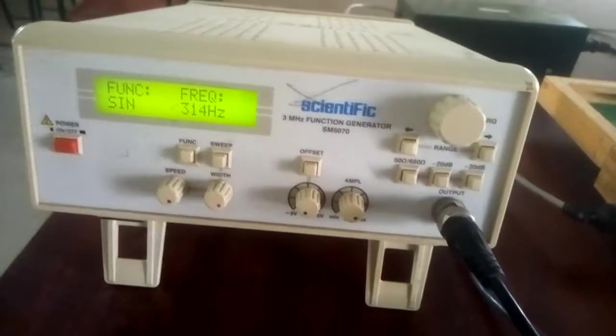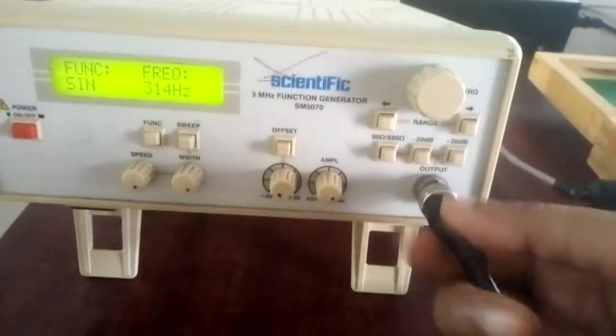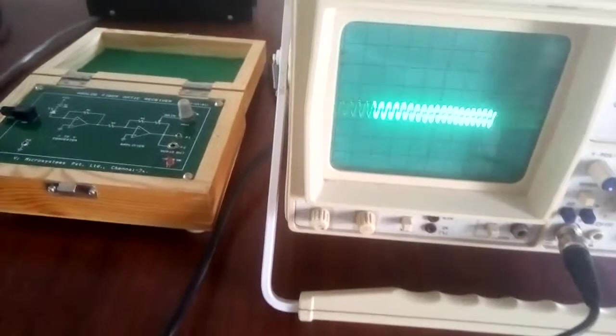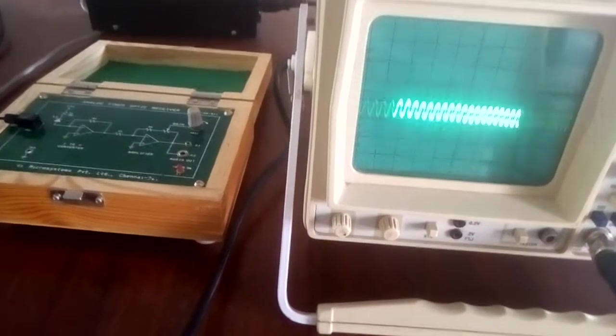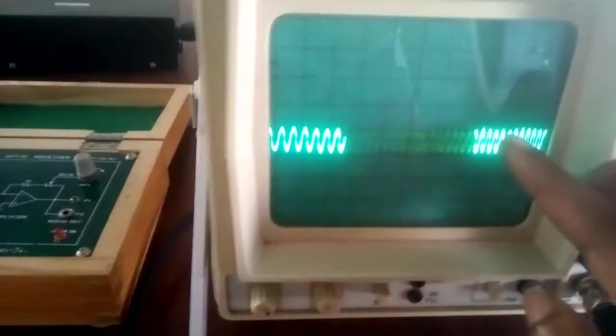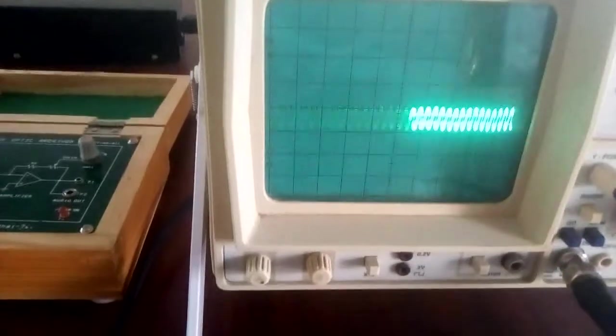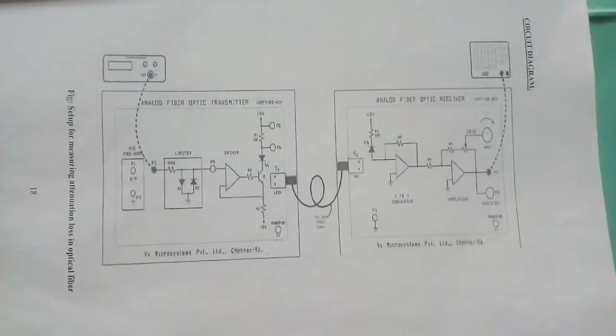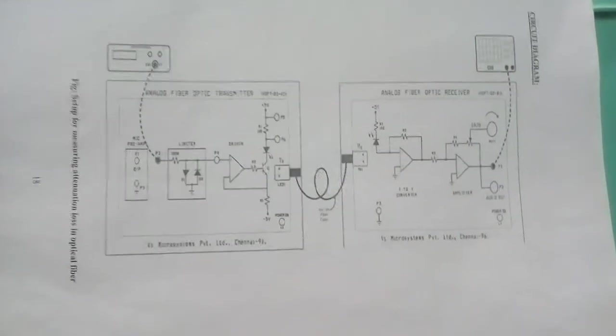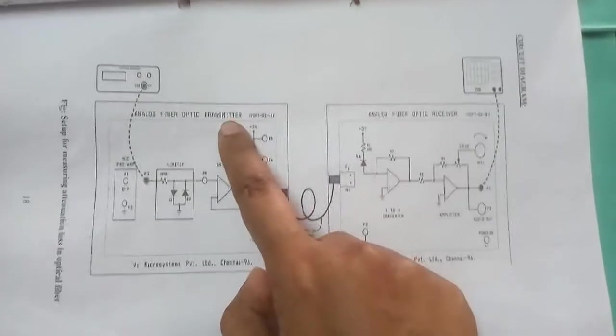Set the FTA — use this probe. Connect the CRO output. Check the input voltage. This is the connection diagram — so this is the Transmitter in the connection diagram.